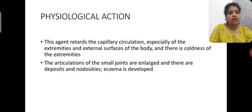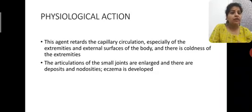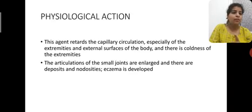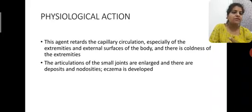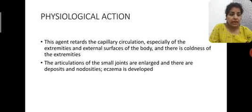About the physiological action — this agent has the capacity to retard the capillary circulation, especially of the extremities and the external surface of the body, producing coldness of the extremities. In capillary circulation, tissues receive oxygen and nutrients. If capillary circulation is retarded, tissue death or tissue changes can occur due to lack of nutrients. So this remedy has a significant effect on blood vessels and capillary circulation.